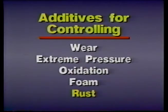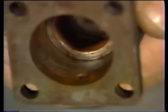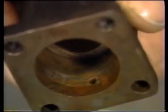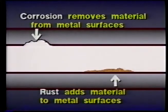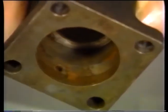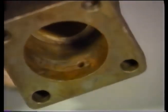Another common problem is rust. Rust may begin to form in a hydraulic system whenever water contaminates the fluid. Rusting is similar to corrosion in that it involves oxidation, but in this case it's the metal parts of the system that are oxidized, not the hydraulic fluid. While corrosion removes material from metal surfaces, rusting adds material and it often interferes with the operation of components. A buildup of rust on the inside surfaces of a valve, for example, may keep it from operating smoothly, and can even prevent it from operating at all.